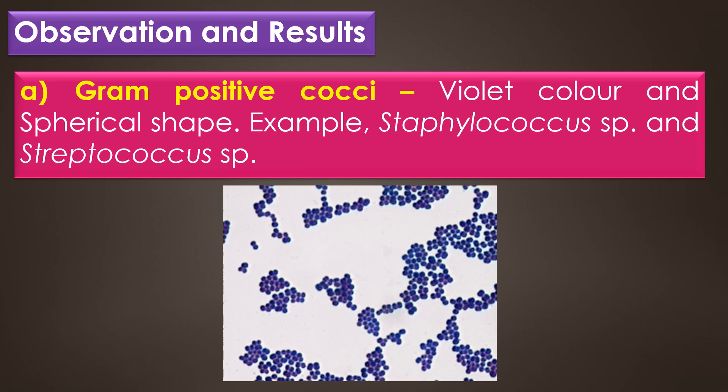Gram positive cocci appear in violet color and spherical shape. Examples for gram positive cocci are Staphylococcus species and Streptococcus species. Staphylococcus species are arranged in the form of clusters or grape-like structures, and Streptococcus species are arranged in the form of diplococci or chains. This image shows gram positive cocci arranged in clusters — Staphylococcus species.